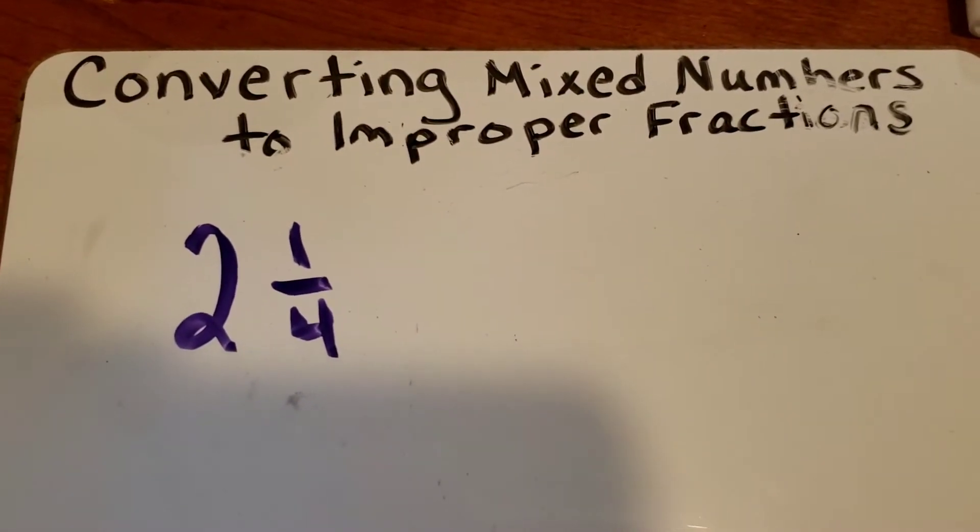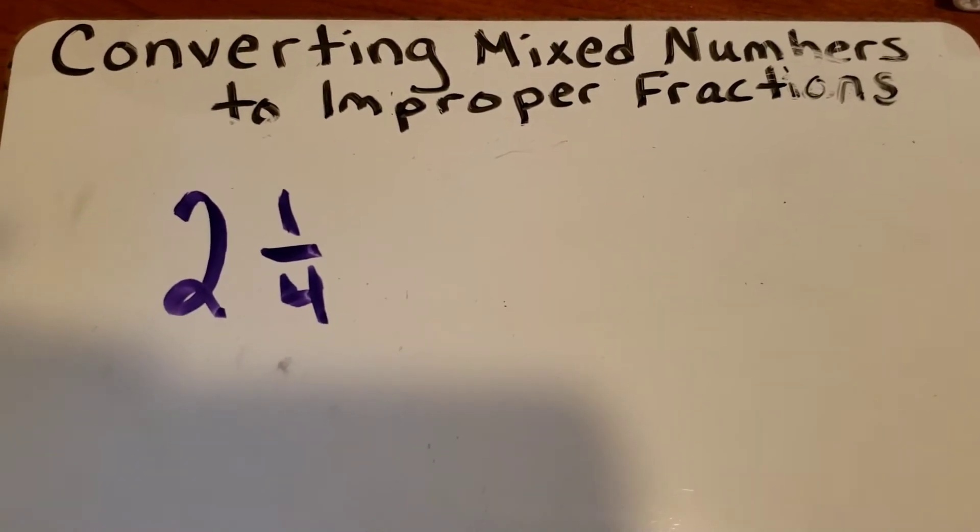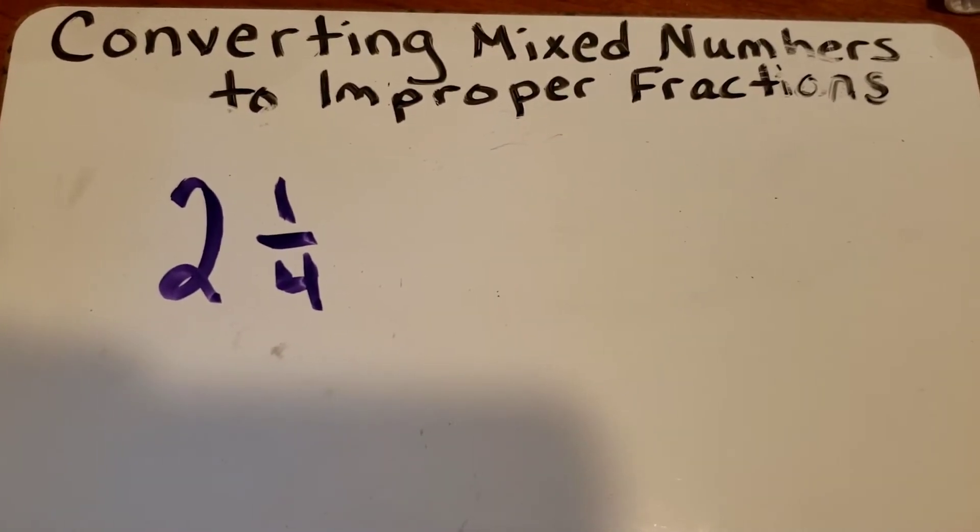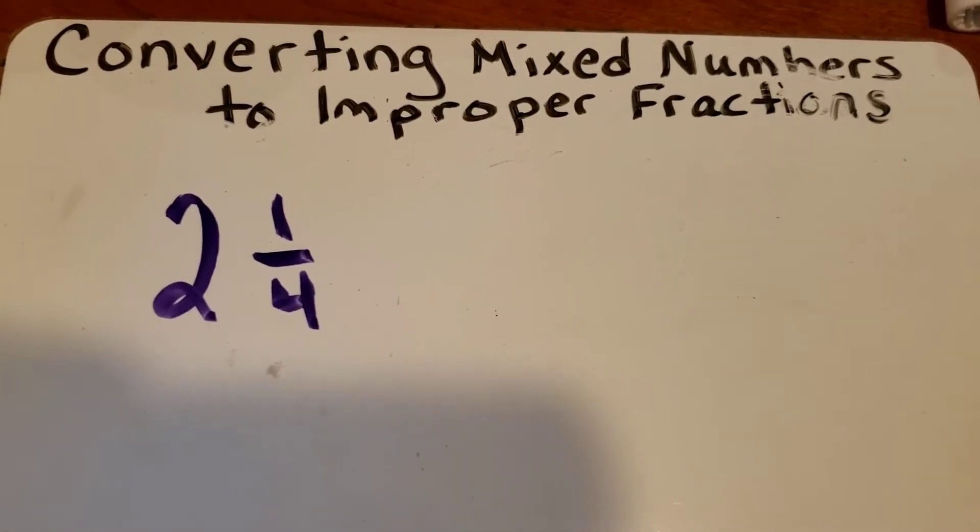Today we're going to talk about converting mixed numbers to improper fractions. Mixed numbers are a combination of whole numbers and fractions, and you've probably used them quite a bit if you've worked in the kitchen with your family.